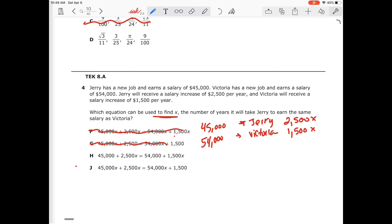H, we have 45,000 plus 2,500X. That looks good. And we had the variable with the per year and we have the 2,500 with Jerry's salary. And then we have equal to 54,000, which is Victoria's salary plus the 1,500X, which is the yearly. So that looks good. Let's make sure again, J just has variables with one of them, not both of them. So again, J won't work. So our answer is definitely H.